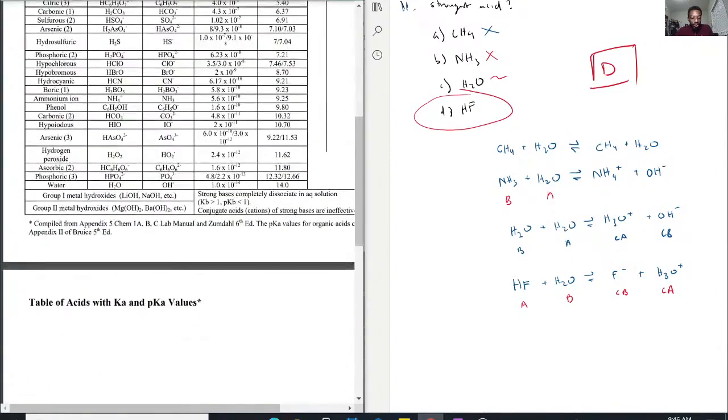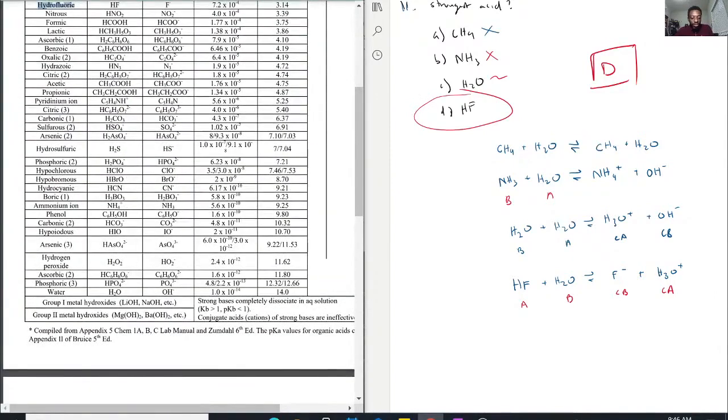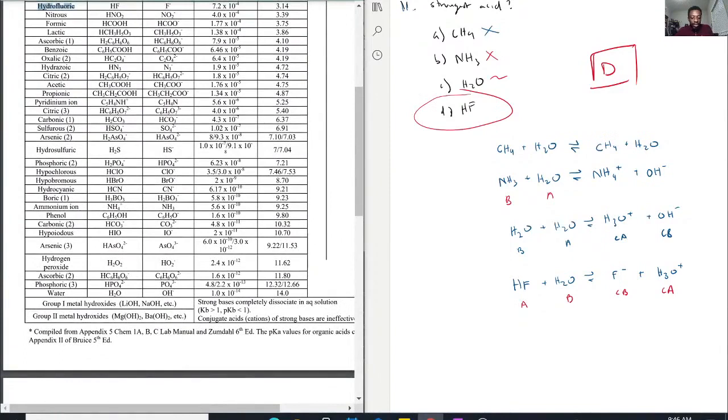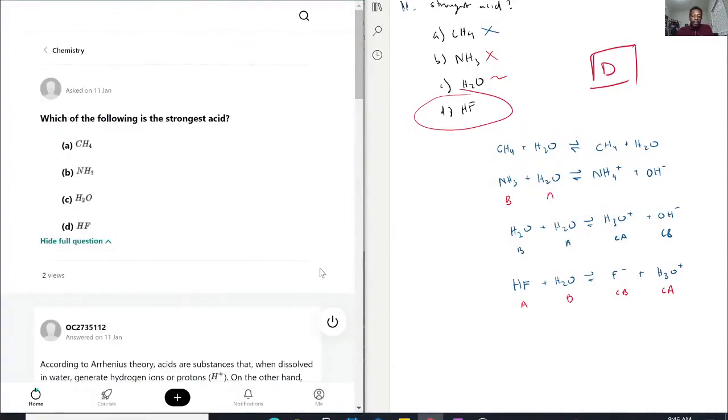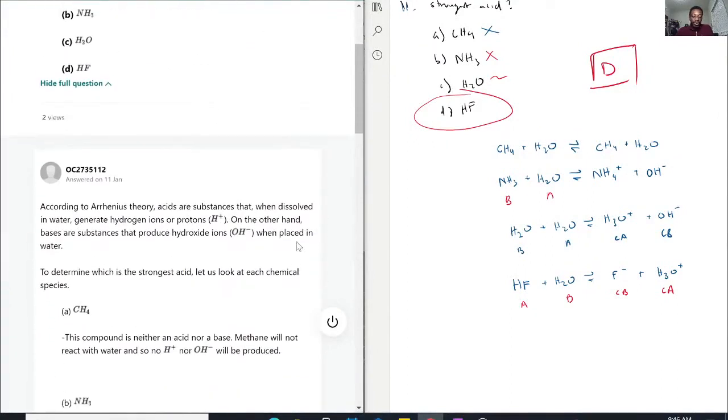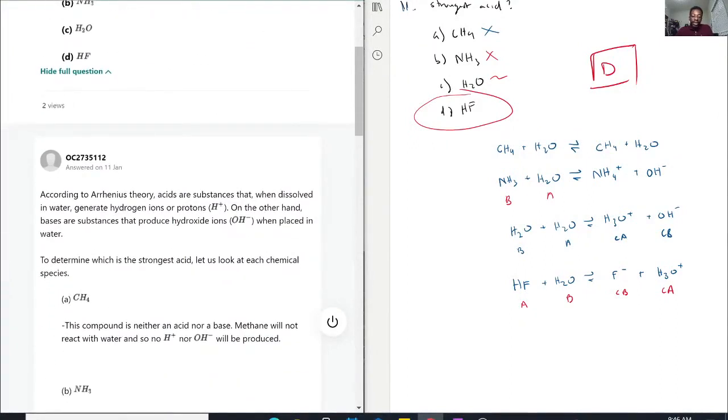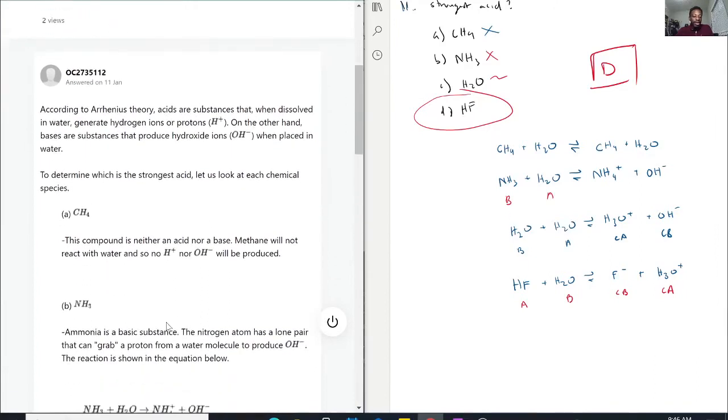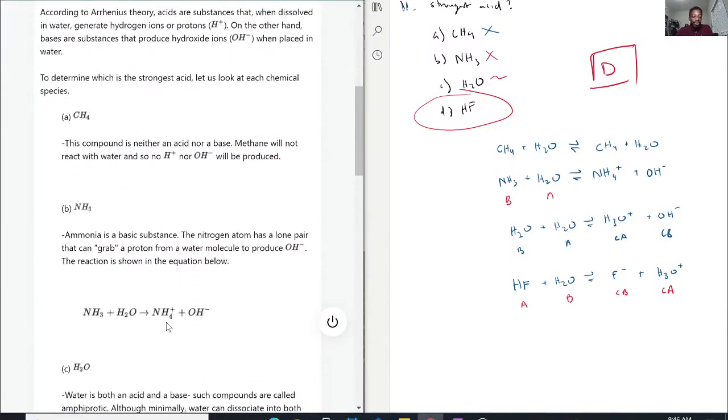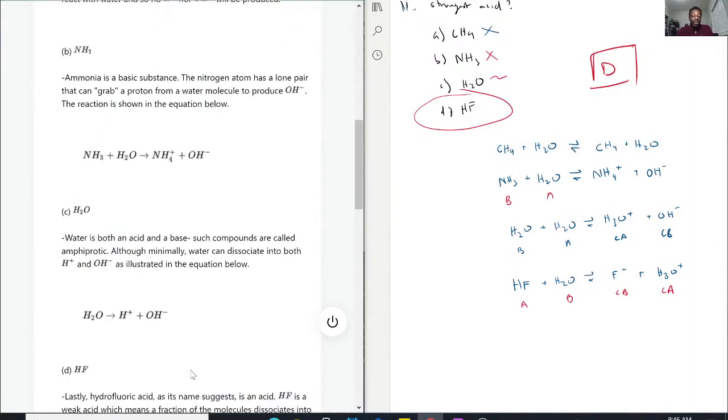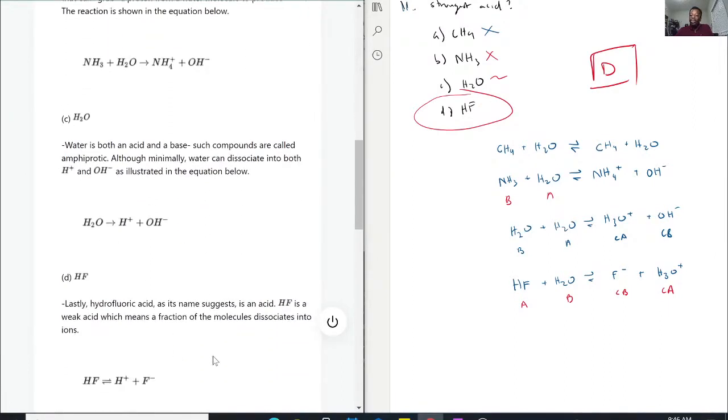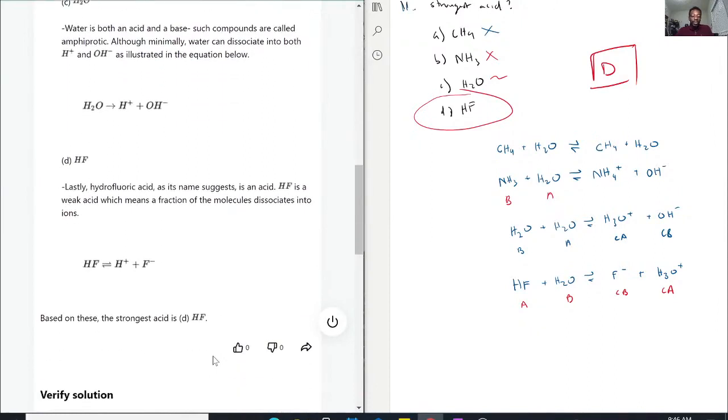Because if we scroll down to where water is, it's all the way near the bottom. H2O, that is the other acid here. So with that being said, HF should be our strongest one. So CH4 is neither acid or base—methane doesn't react. NH3 ammonia is actually a base. H2O can serve as either, so we don't know. And HF is the only one that actually donates a proton.